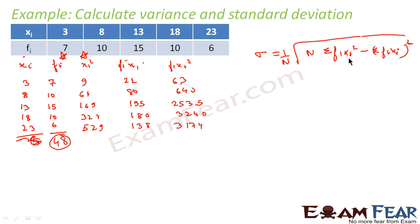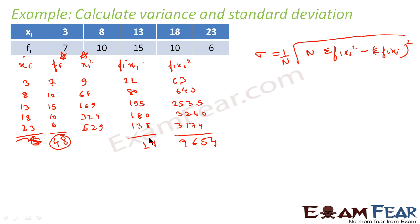Next, we add up the fi·xi squared values to get sigma fi·xi squared, which comes out to 9654. Similarly, adding up fi·xi values: 21 plus 80 plus 195 plus 180 plus 138 gives sigma fi·xi equal to 614.